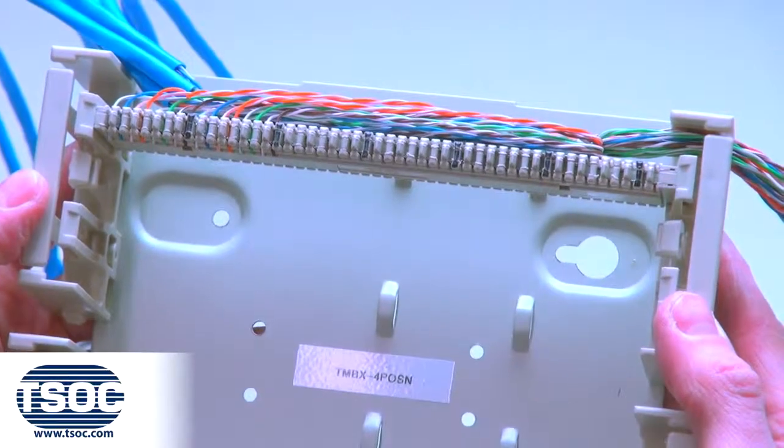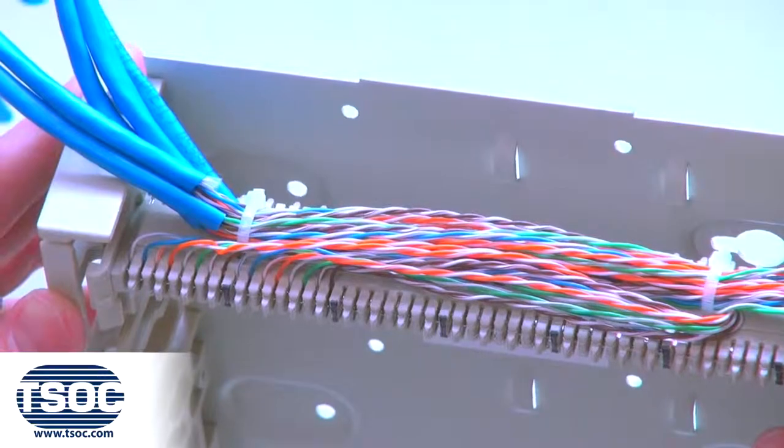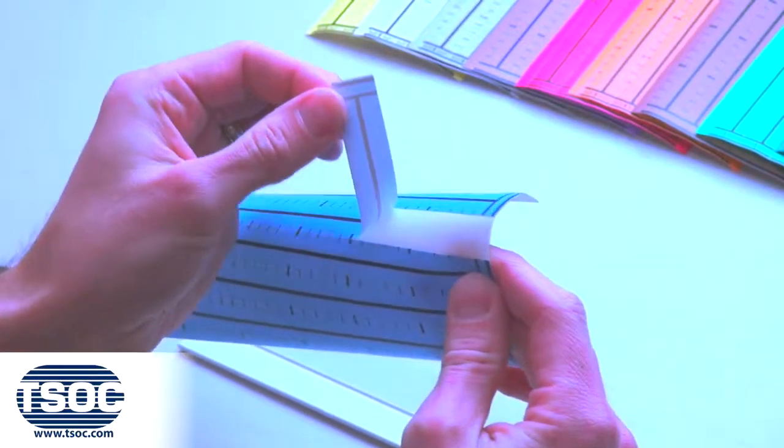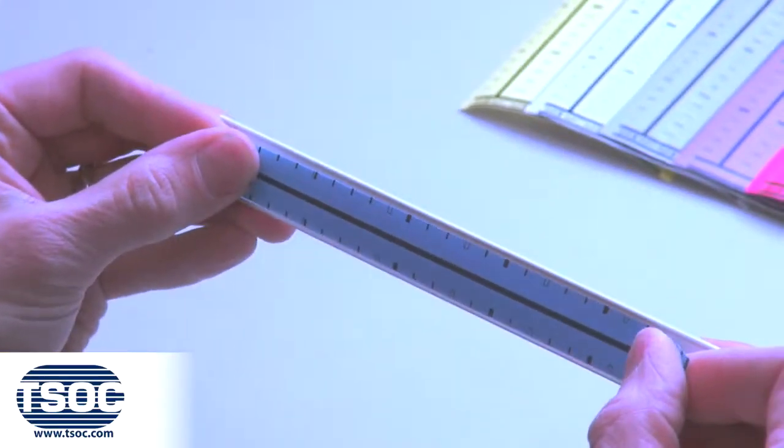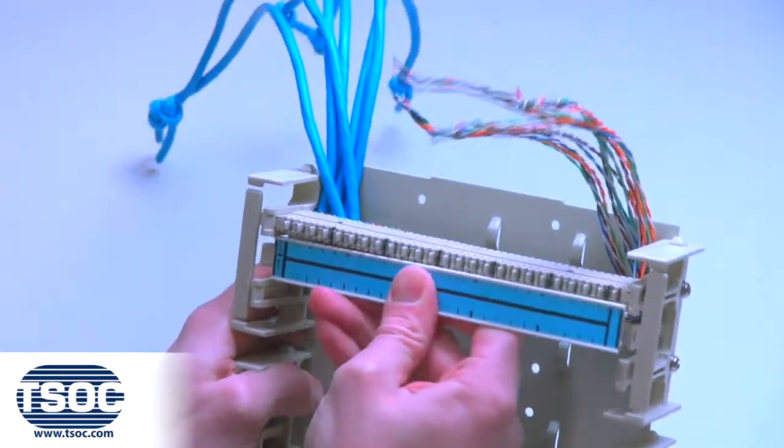Insert the distribution connector into the distribution frame with the terminated cable side down. Step 6: Place the required designation label onto the designation strip and install into the appropriate position of the distribution frame.